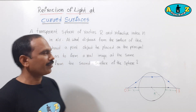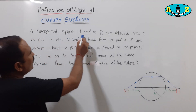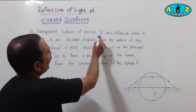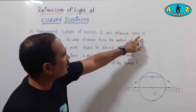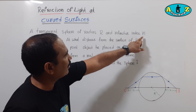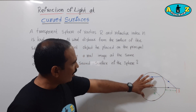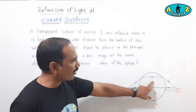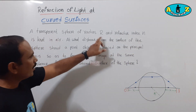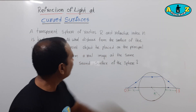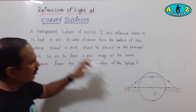Understand the question. A transparent sphere of radius r and refractive index n is kept in air.